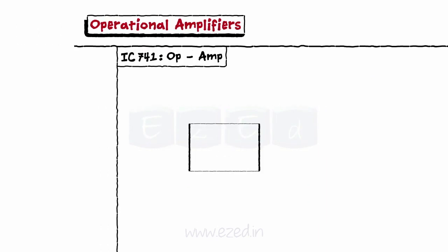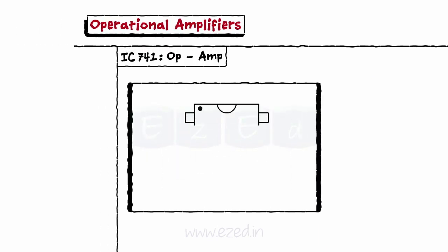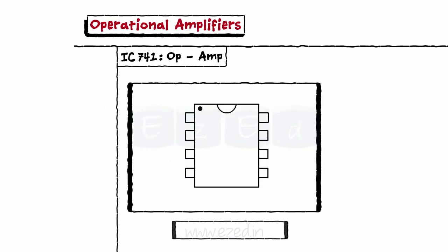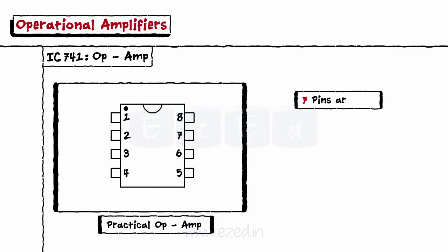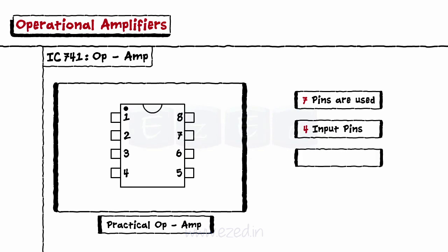The practical form of an op-amp is an IC with eight pins numbered from one to eight. The black dot on the left side indicates we must start counting the pins from that dot serially. Out of those eight pins, only seven pins are used — four pins are for input and one pin is for output. Hence, the name of this IC is IC741.